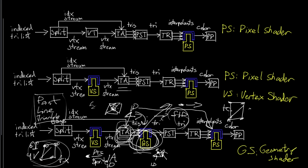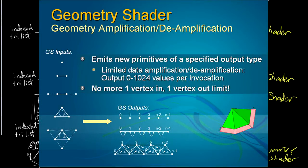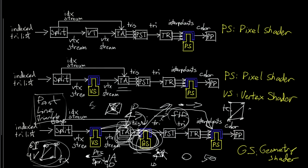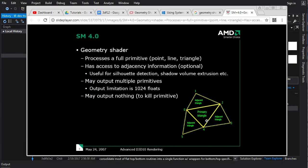The geometry shader can also output a different number of primitives than it receives — it can take in one triangle and output zero, or output fifty triangles. Outputting more than you take in is geometry amplification. It can also reject geometry entirely by outputting nothing for a given input. We could implement rejection easily in our current pipeline, but we're not doing amplification because in practice it's barely used.